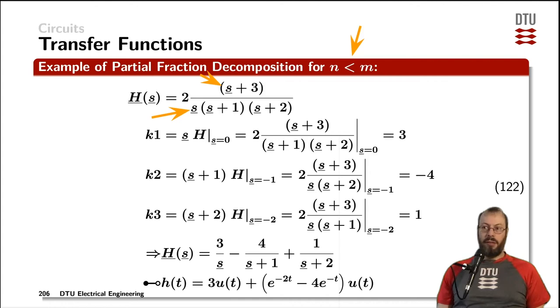We have the three different poles: the first one at zero, the second one at minus one, and the third one at minus two. We insert those poles in the original transfer function and multiply with the corresponding pole. So s equals zero in the first place, s equals minus one for the pole s plus one in the second case, and s equals minus two for the pole s plus two in the third case.